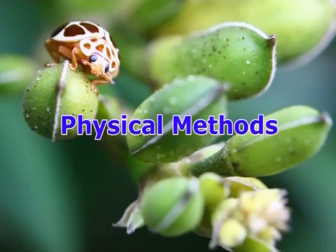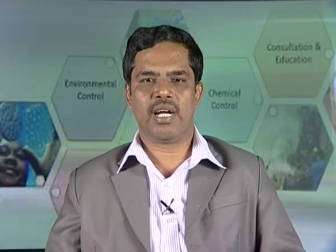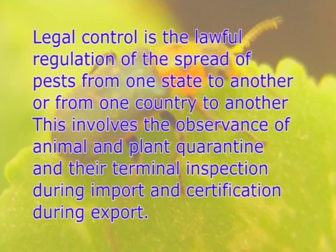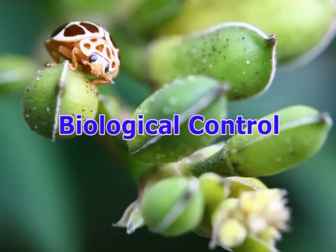Third: physical methods. Physical methods involve manipulation of temperature, humidity and the use of radiant energies. These methods are particularly useful for destroying stored grain pests with the help of cooling, heating and radiant energies like radio frequencies, infrared rays, visible light, ultraviolet rays and ionizing radiations. Fourth: legal control. Legal control is the lawful regulation of the spread of pests from one state to another or from one country to another; this involves the observance of animal and plant quarantine, their terminal inspection during import, and certification during export.